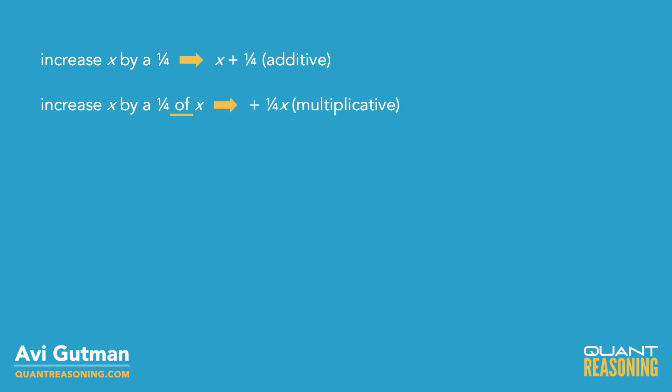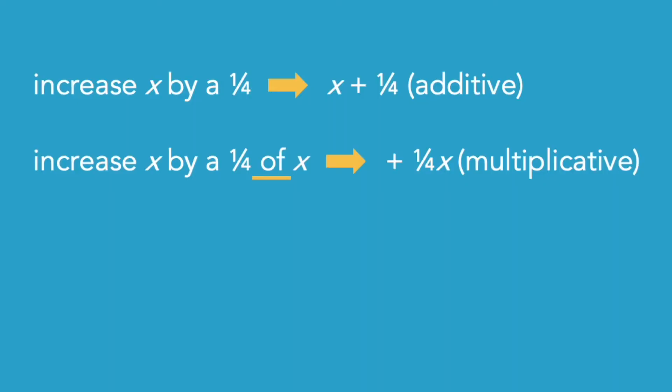The quarter, in this case, is not just a quarter. It's a quarter of something, and the word 'of', of course, translates into multiplication. A quarter of 100, for example, is 25. How did I get 25? I multiplied a quarter times 100.